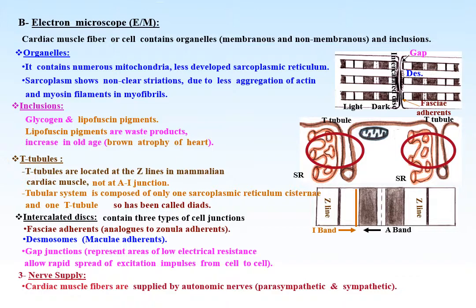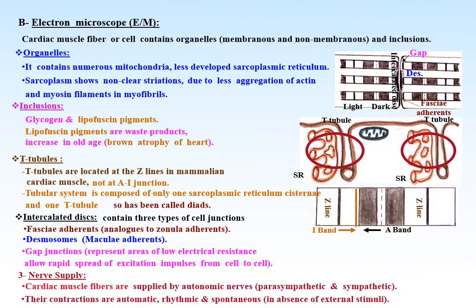Gap junctions allow rapid spread of excitation impulses from cell to cell. Cardiac muscle fibers are supplied by autonomic nerves — parasympathetic and sympathetic. Their contractions are automatic, rhythmic, and spontaneous in the absence of external stimuli. Cardiac muscle is well vascularized, striated, and involuntary in action.